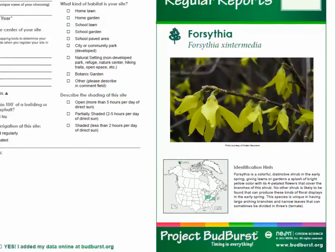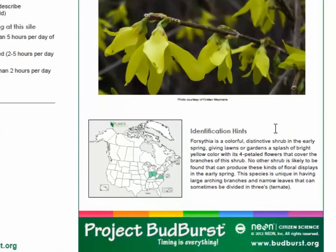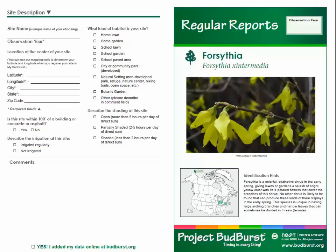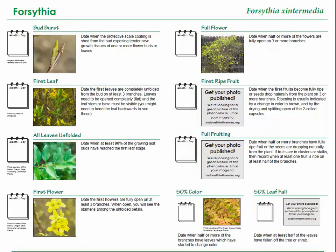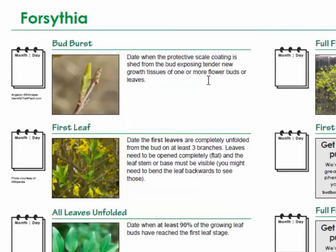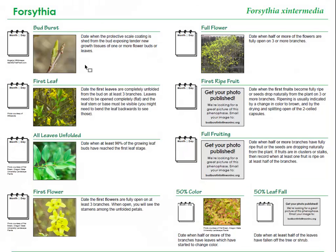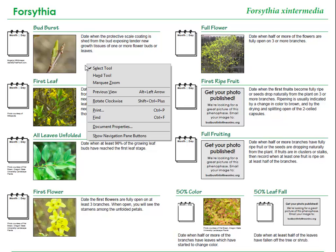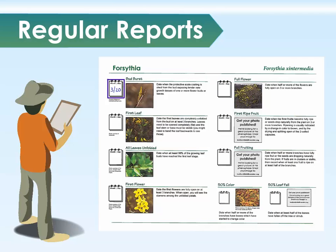Notice that the report form includes a description of forsythia, descriptions of the phases to watch for, and photos of the different phases where available. If you decide to make regular reports of your plant, you will need to print this report form and take it outside with you to write down your observations. When you observe a phase first occurring, write the date that you observed it in the box next to that phase. Record the date for each phase when you observe it. Keep in mind the phases may not always occur in the order listed on the form, so watch your plant carefully.